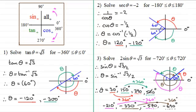So the black answers here are our solutions. I hope that's given you some idea of how we go about solving and drawing diagrams for questions like this using the Quadrant Rule when we've got different ranges.